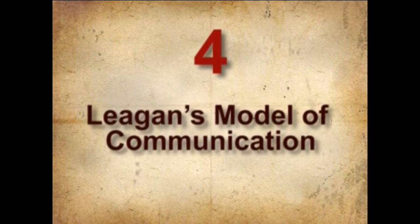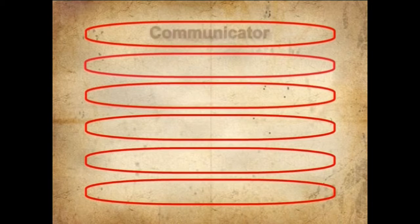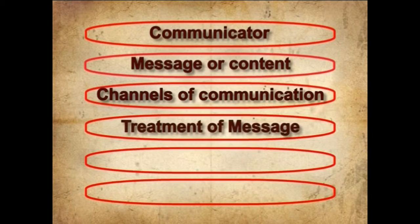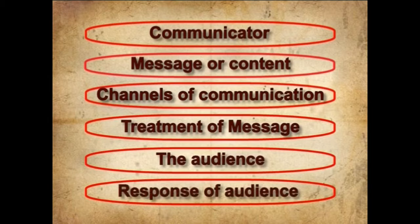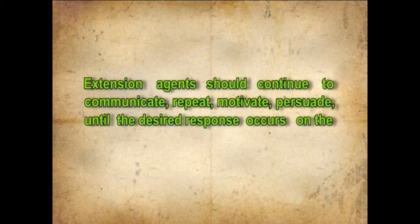In the fourth model of communication, we discuss Leagans' model. According to G.P. Leagans, during 1961, successful communication in agricultural extension education or agro-advisory services requires a skilled communicator sending a useful message through a proper channel, effectively treated to an appropriate audience that responds as desired. The key elements in his model are: communicator, message or content, channels of communication, treatment of message, the audience, and the response of audience. According to him, extension agents should continue to communicate, repeat, motivate, and persuade until the desired response occurs on the part of the receivers.